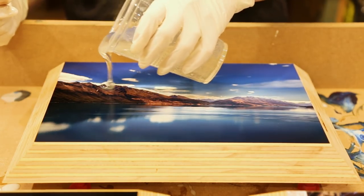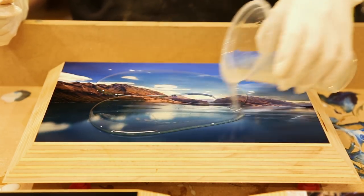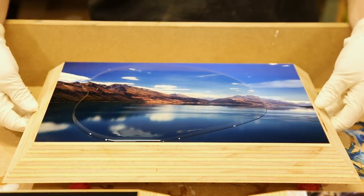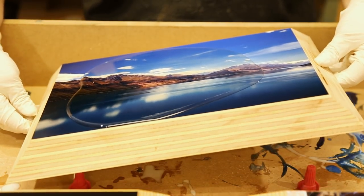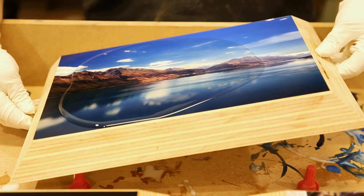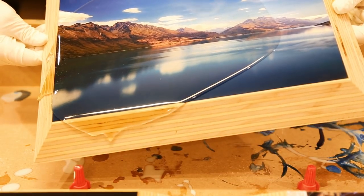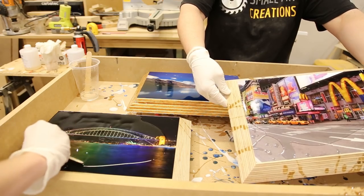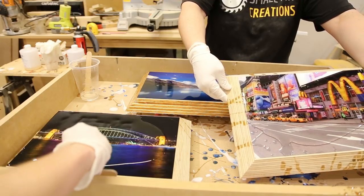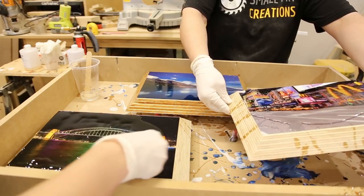Once the resin was mixed to clear it was then time to pour. I poured the resin in the middle of the photo and then tilted the photo moving the resin around to ensure the whole photo and sides were covered. You can also use a paddle pop stick to spread the resin if you like. You'll find that the resin will typically self level.